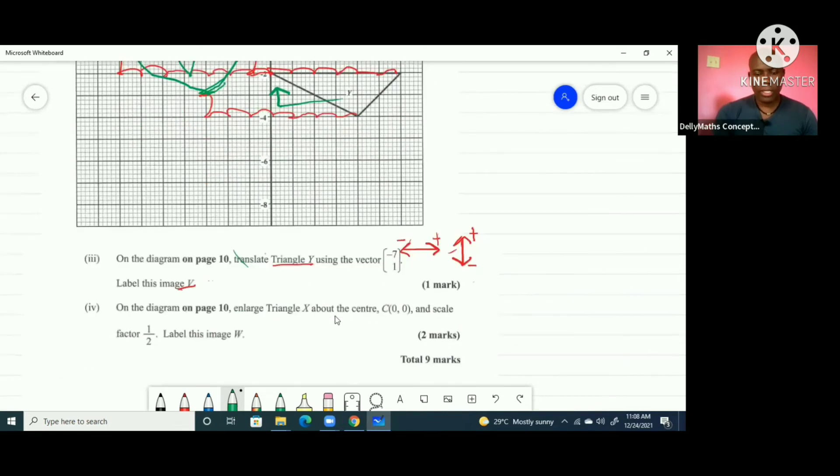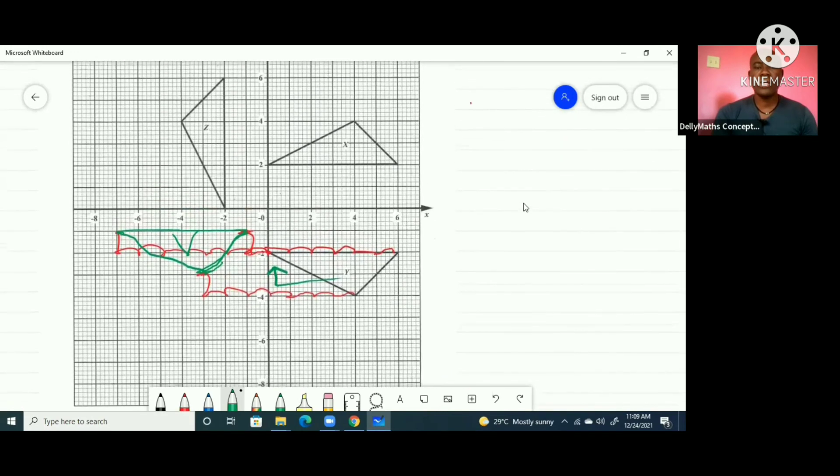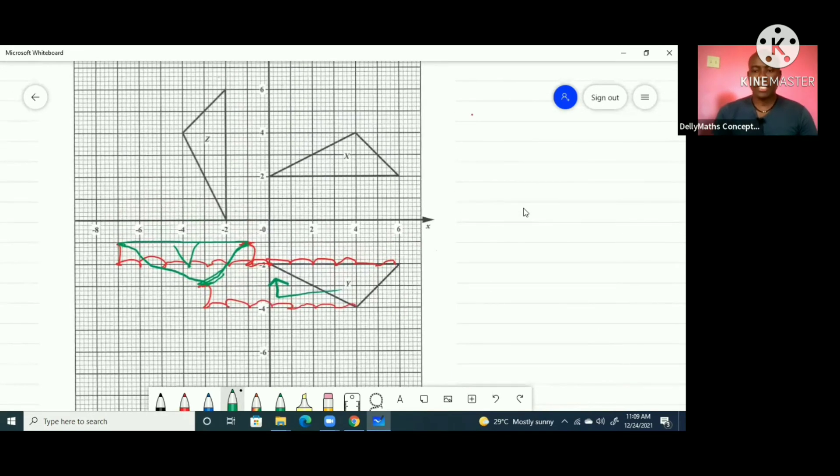The next question says on the same diagram, enlarge X at the center 0, 0 by using a scale factor of a half. A scale factor of a half means that we're going to enlarge this, and it's a dilation. Enlarge does not necessarily mean to get bigger. The concept is dilation. When we have a scale factor of a half, it means that everything will be reduced. So we're going to have a diminished shape here.